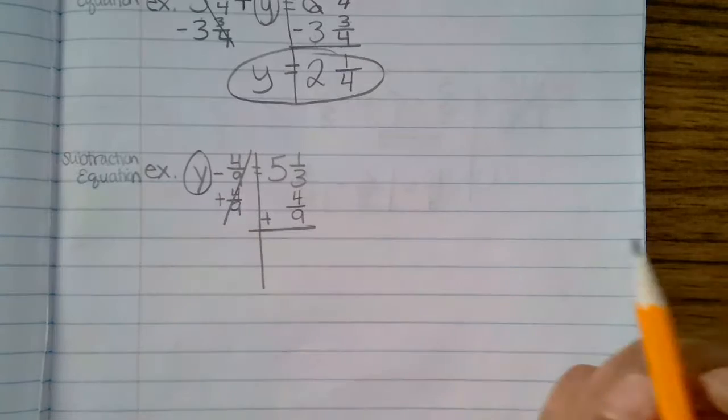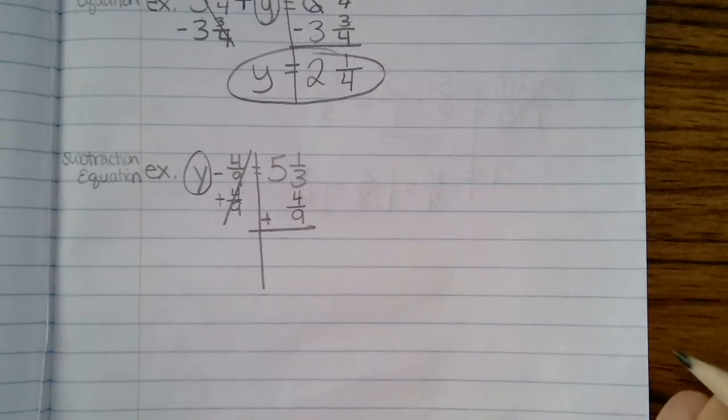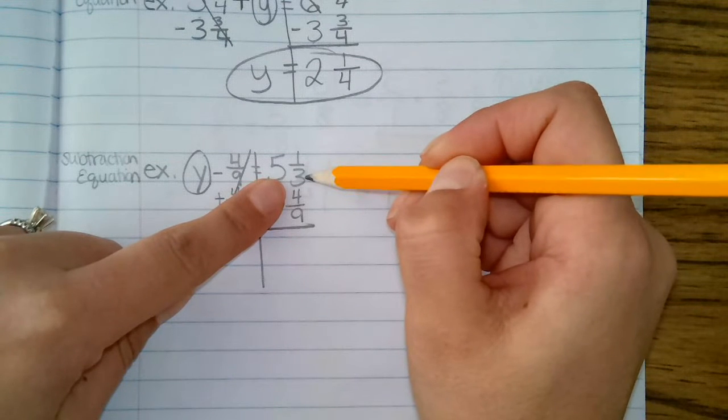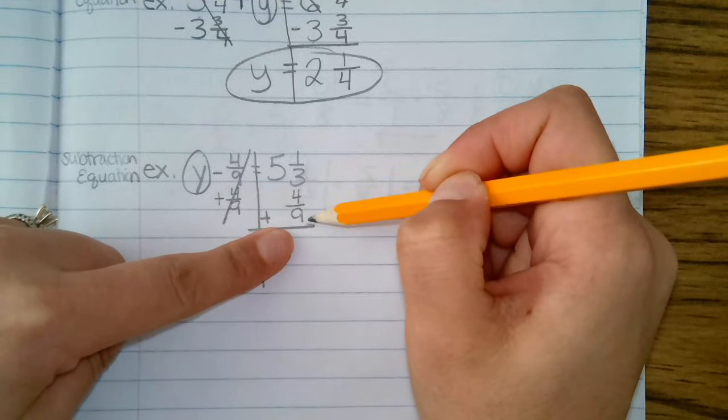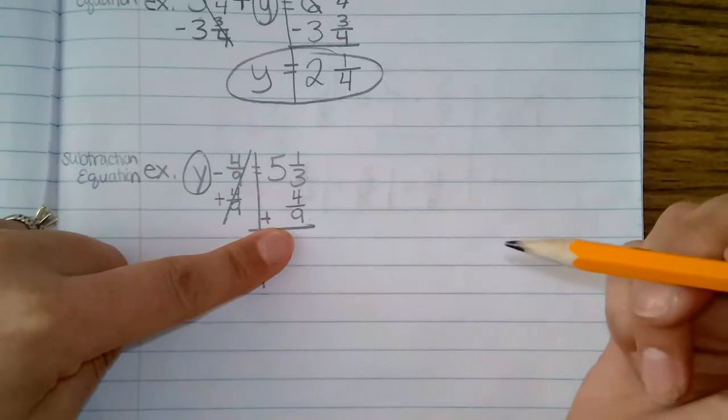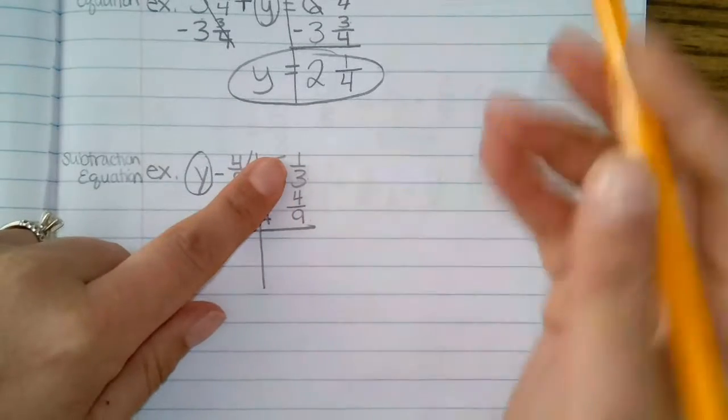I'm going to add this. However, I'm looking here and I see that I have one fraction that has a three as a denominator and one fraction has a nine as a denominator. I cannot add these until they are the same denominator. So I'm going to pull these fractions out.